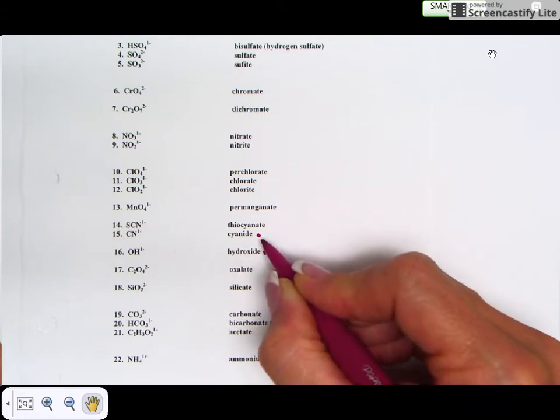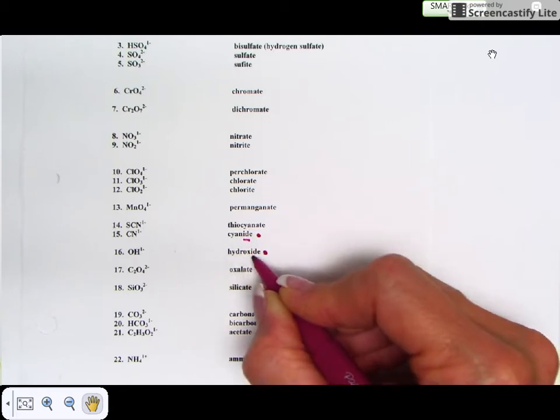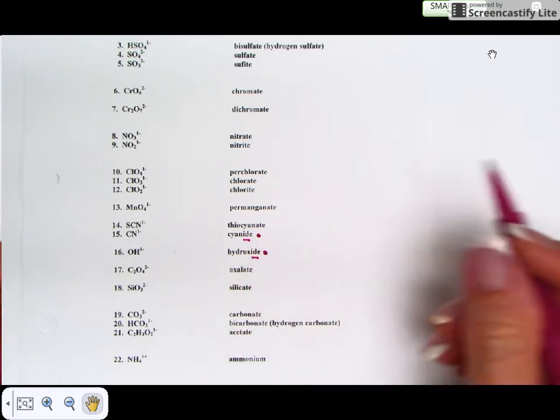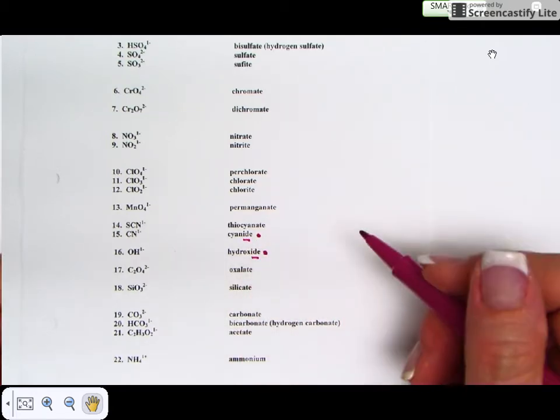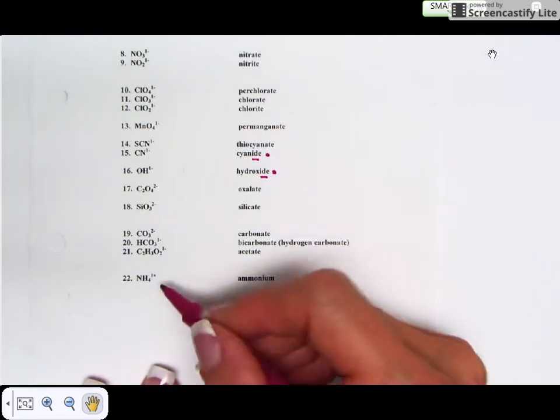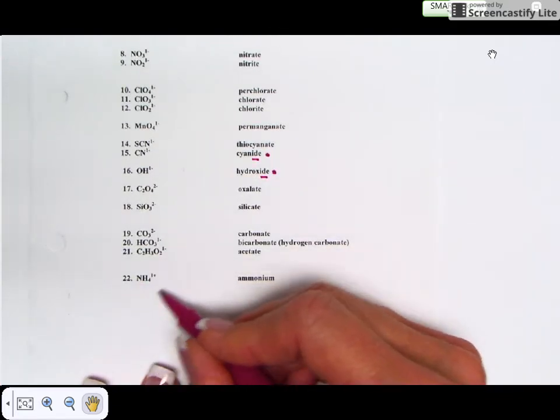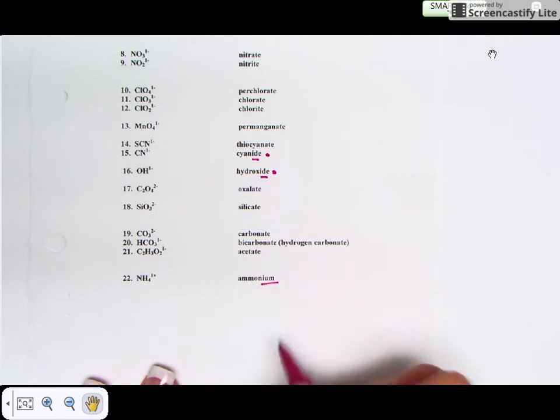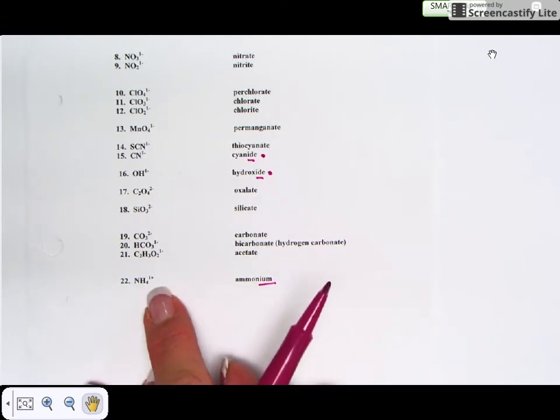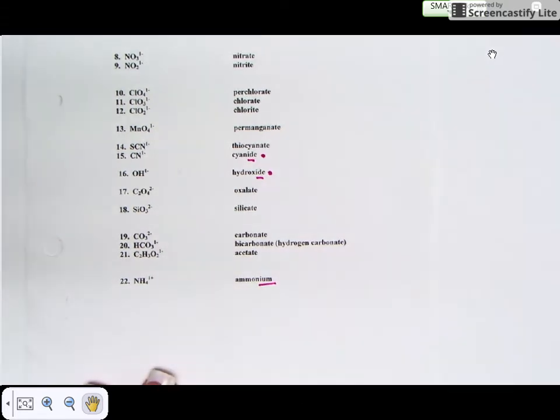These do not end in -ate or -ite, so they end in -ide like many of your binary compounds with nonmetals. And then we have a positive one, a cation. This is the only cation, ammonium, and it ends in -ium. This is your only cation of the polyatomics that I'm giving you guys to learn.